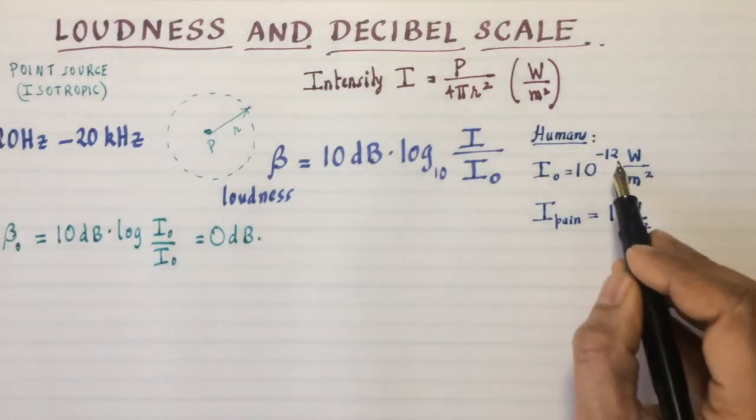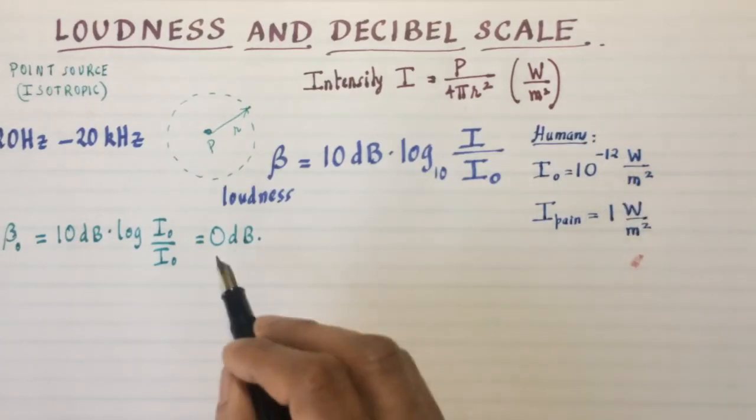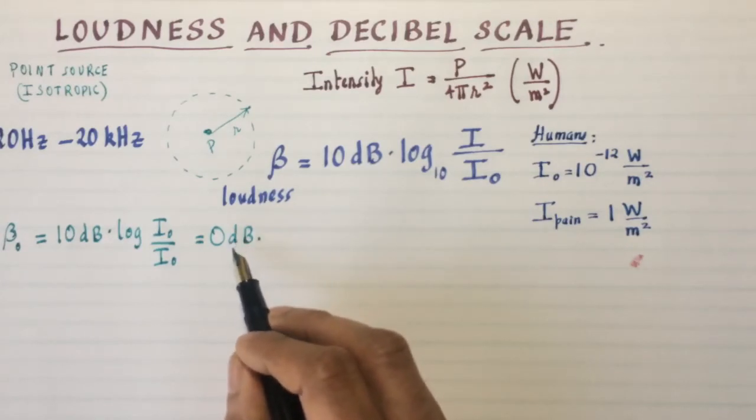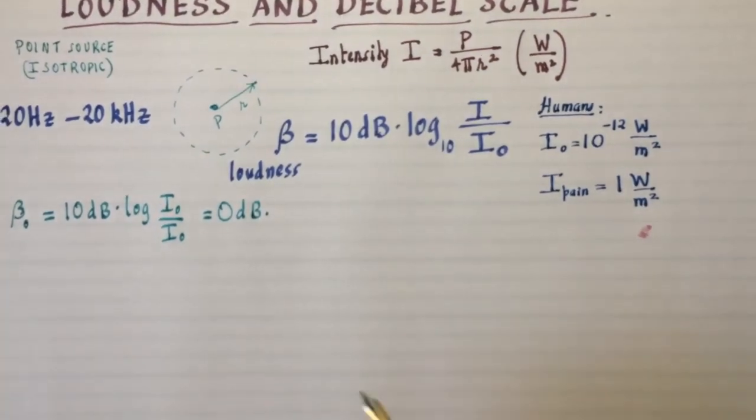By the way, for human beings, it's 10⁻¹². For cats, it's 10⁻¹⁴. So cats can hear 100 times better than you at the low end. So what you think of as zero dB for you is 20 dB for the cat, which is pretty loud for an animal of that size.